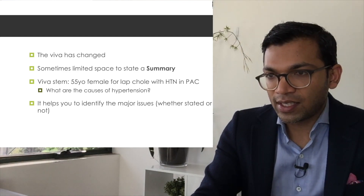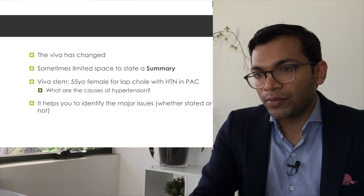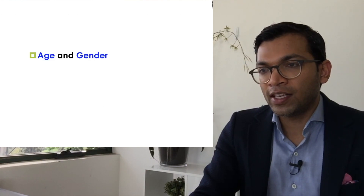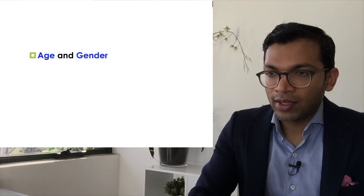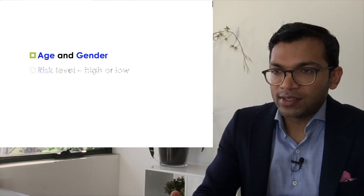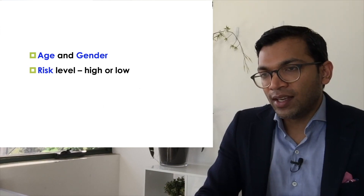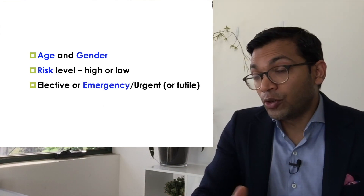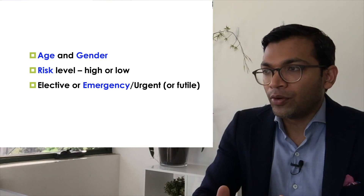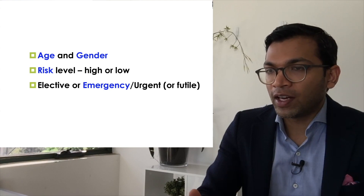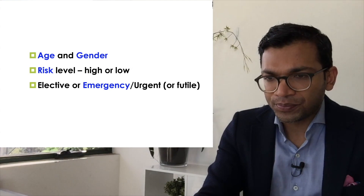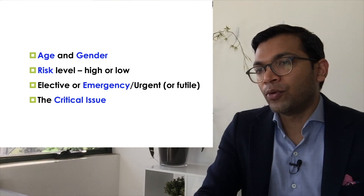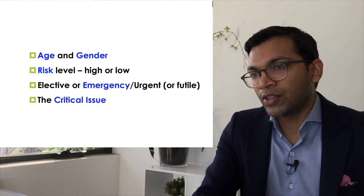Let's talk about the magic words. Age and gender are obvious risk stratification tools that prime our minds to think of specific diseases and outcomes in the operating theatre and anaesthesia. Risk level — high or low — is your perception of the risk of the situation, not the ACC/AHA classification. In a viva you're generally going to be tested on high-risk cases. Elective versus emergency or urgent surgery is really important for framing — emergency means you need to proceed quickly with minimal optimization.